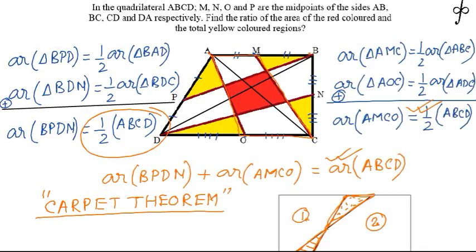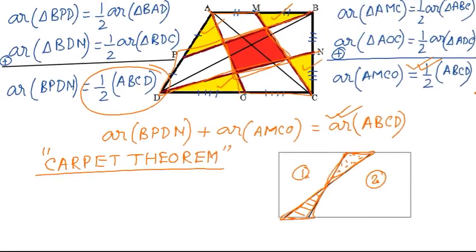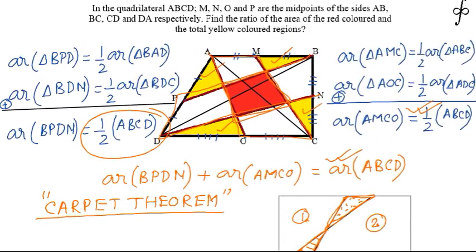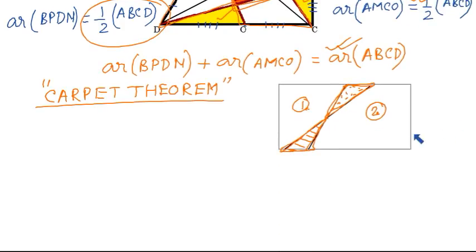So here, the two strips AMCO and BPDN on addition give the total area of the region ABCD. By the Carpet Theorem, the area of the overlap — the red colored portion — is balanced by the total area of the leftover part, which is the yellow colored region. So the area of the red colored region equals the total area of the yellow colored region, and the ratio is 1 to 1.